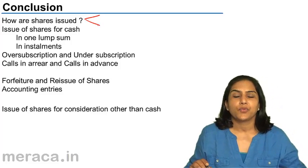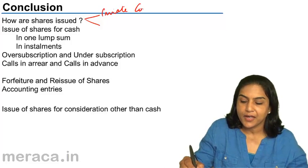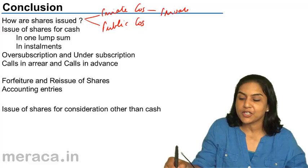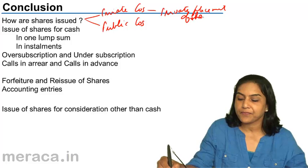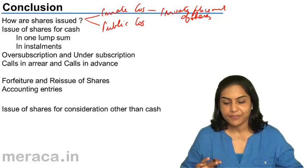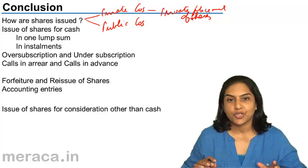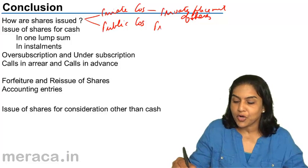Basically, we said companies could be private companies or public companies. In the case of private companies, there could be a private placement of shares — that means the shares are offered to certain individuals. But when shares are issued to the public, we make an invitation to the public in the form of a prospectus.